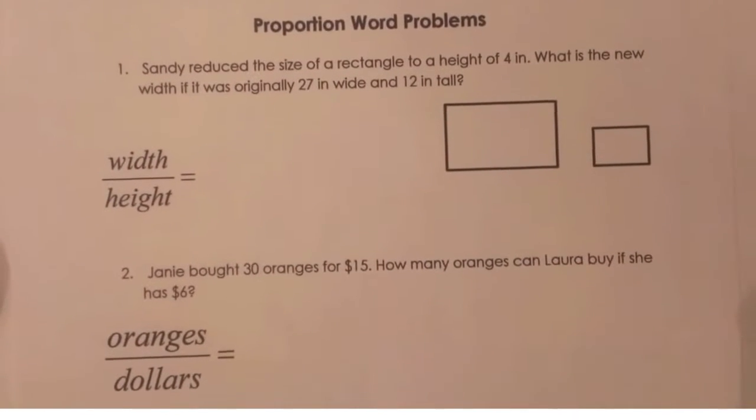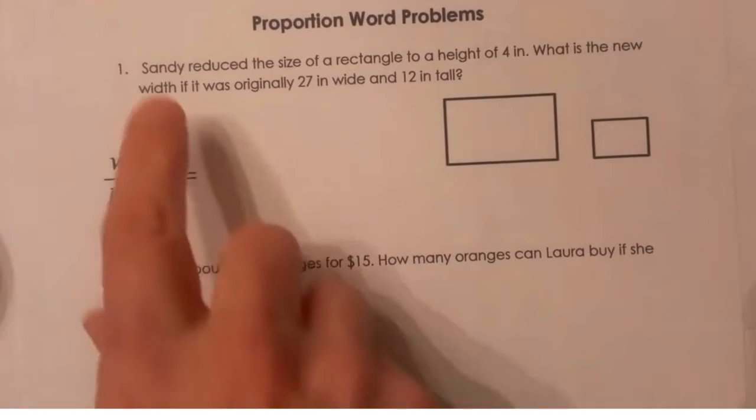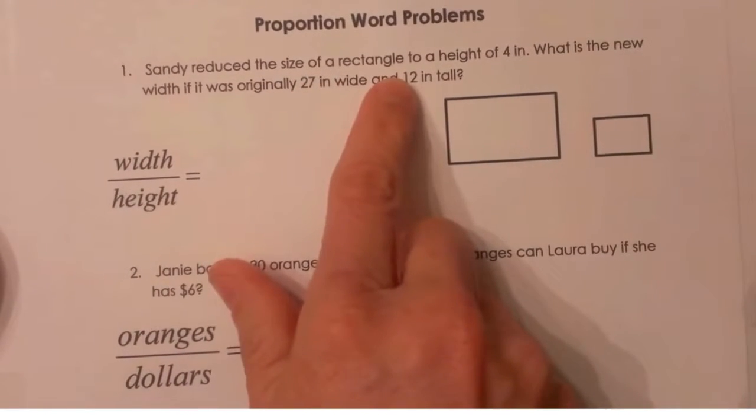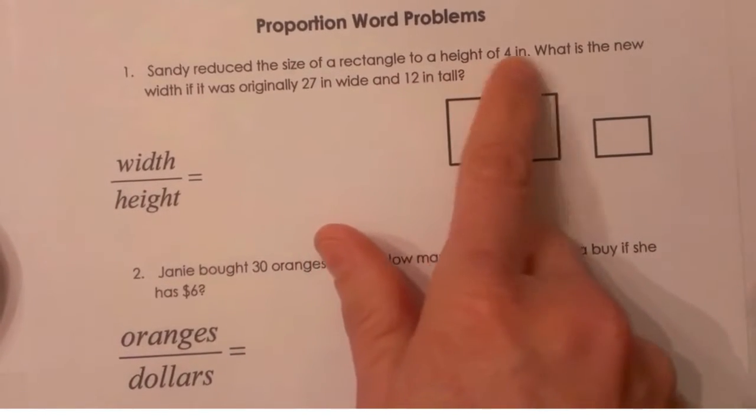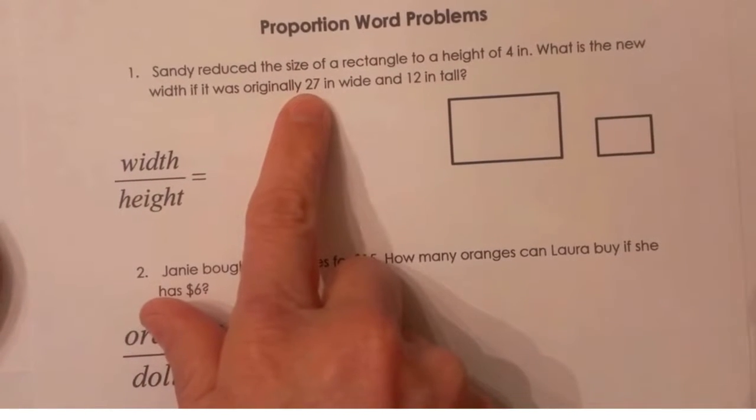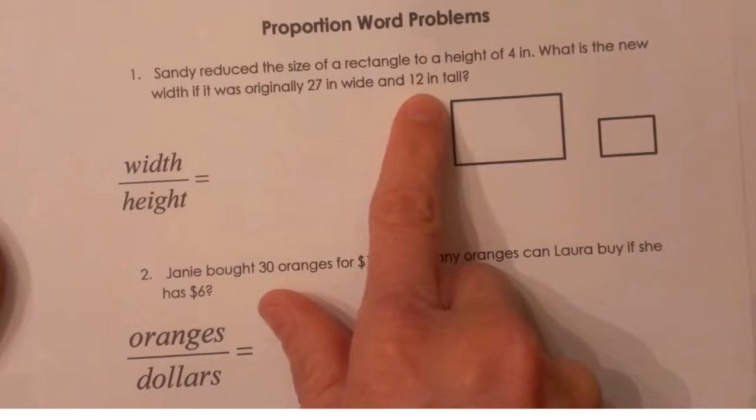To solve some proportion word problems, the first one is Sandy reduced the size of a rectangle to a height of 4. What's the new width if it was originally 27 inches wide and 12 inches tall?